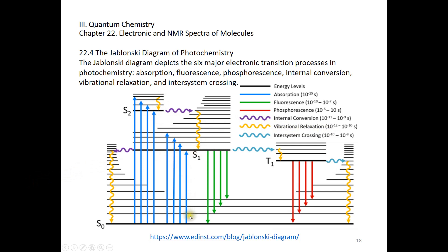You can also go from S1 horizontally through so-called internal conversion — internal conversion from S1 to S0. In the internal conversion process, the electron spin is conserved, so it goes from singlet to singlet, from S1 to S0. Although it reaches the S0 ground electronic state, the molecule is actually in a vibrationally excited state with a very high vibrational energy level — perhaps N equals 11 or 12. The vibrational quantum number can then decrease to lower values. This is depicted by the wiggle arrow in purple — it's called internal conversion. You can also go from S2 to S1, which is also internal conversion, followed by vibrational relaxation.